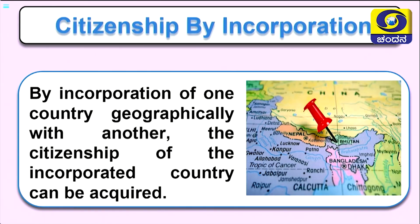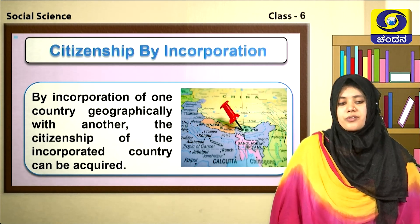The next method is citizenship by incorporation. By incorporation of one country geographically with another, the citizenship of the incorporated country can be acquired. For example, if a country acquires some area of another neighboring country, the people residing in that particular area can get the citizenship of India.